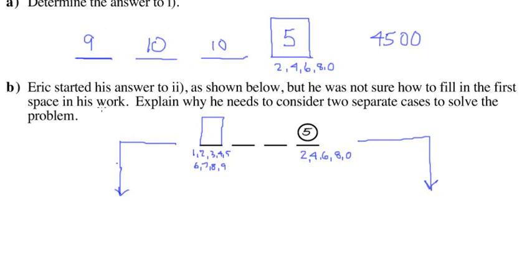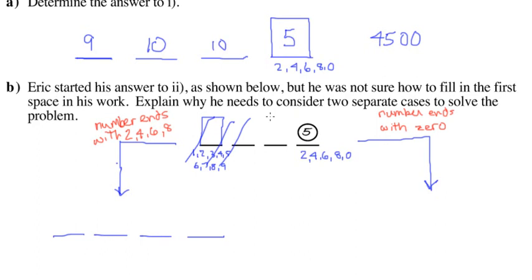The first one is going to be the number ends with two, four, six, or eight. And then separately, I'm going to do the number ends with zero. Let's see what happens now. This was impossible. Not impossible, but too hard for me anyway.